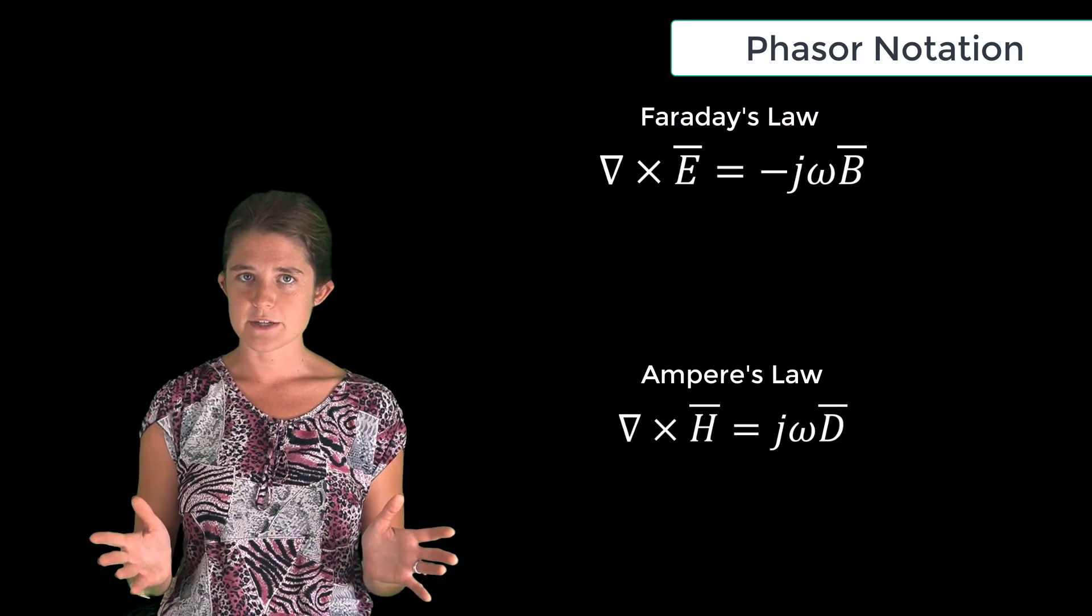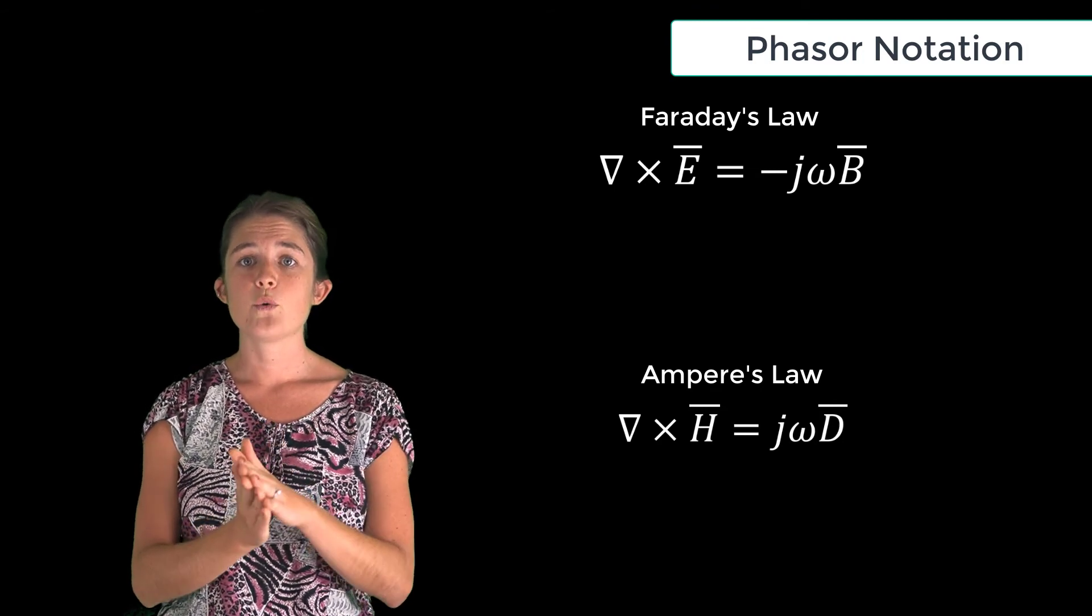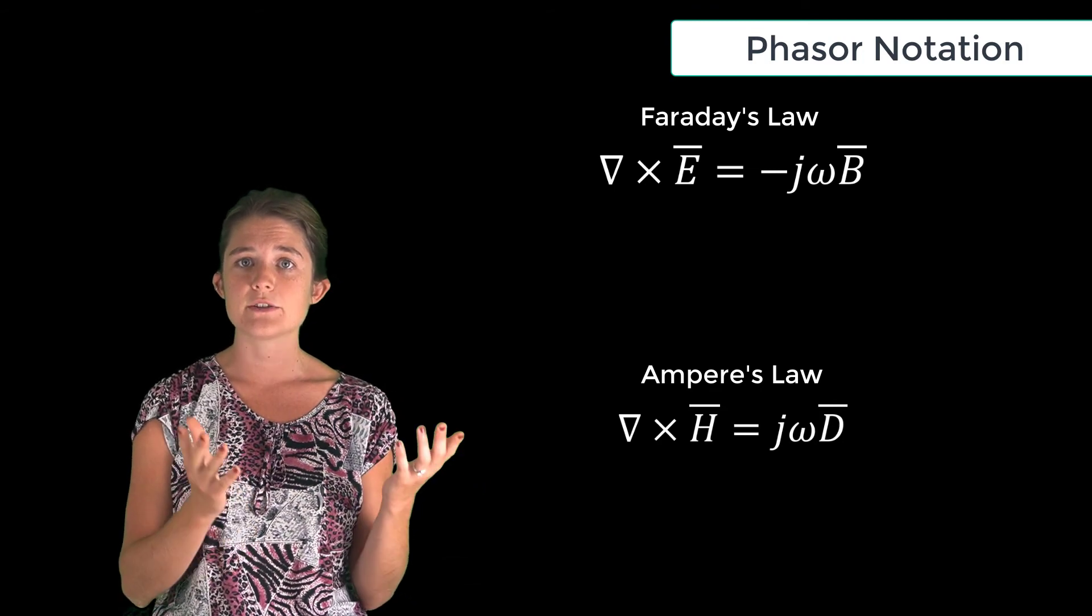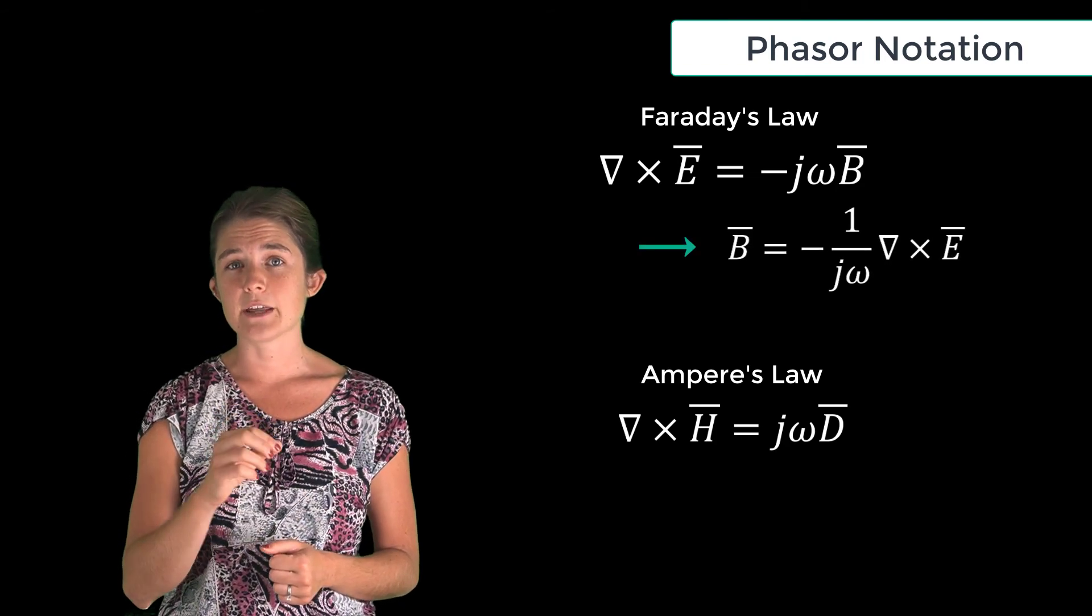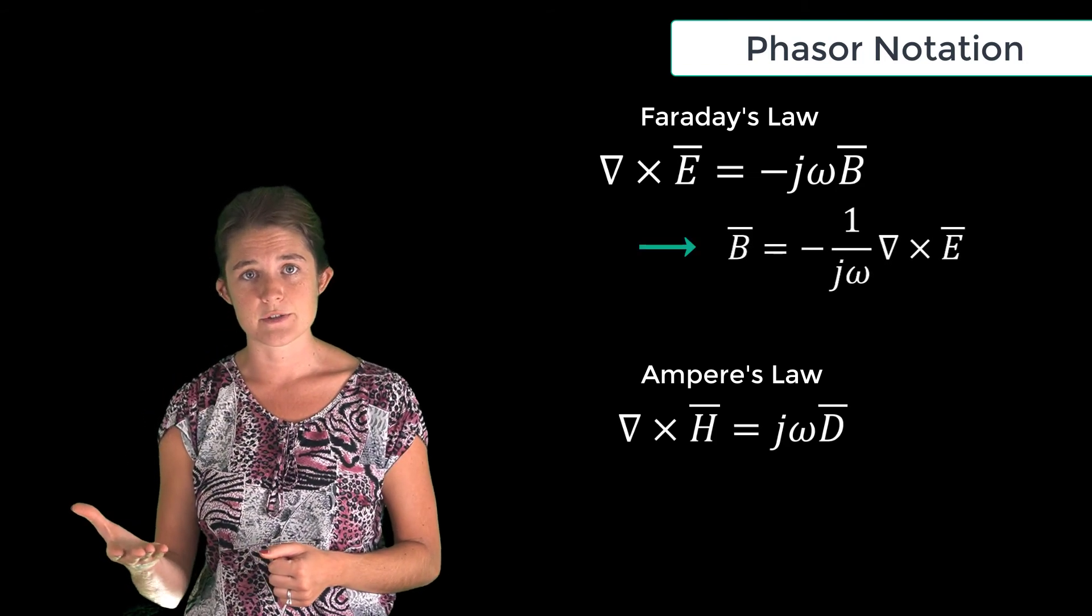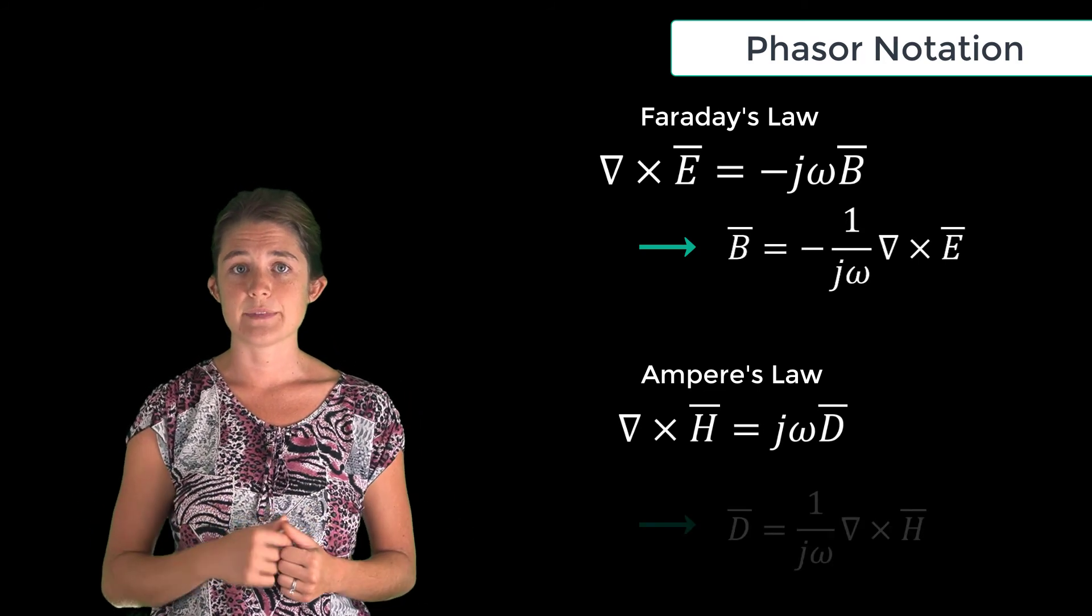So now if we're given the electric field in a region, we can solve for the magnetic field using Faraday's law rearranged like this. And similarly, if we're given the magnetic field in a source-free region, we can solve for the electric field using Ampere's law like this.